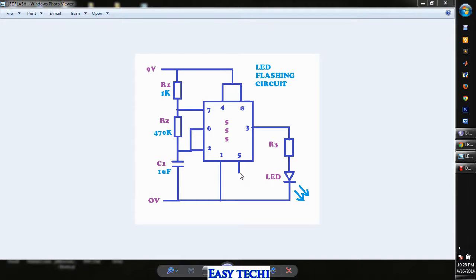Pins 2 and 6 must be shorted. The 1 microfarad capacitor, that is C1, must be connected to pin 2. The positive end connects to pin 2 and the negative end connects to ground.